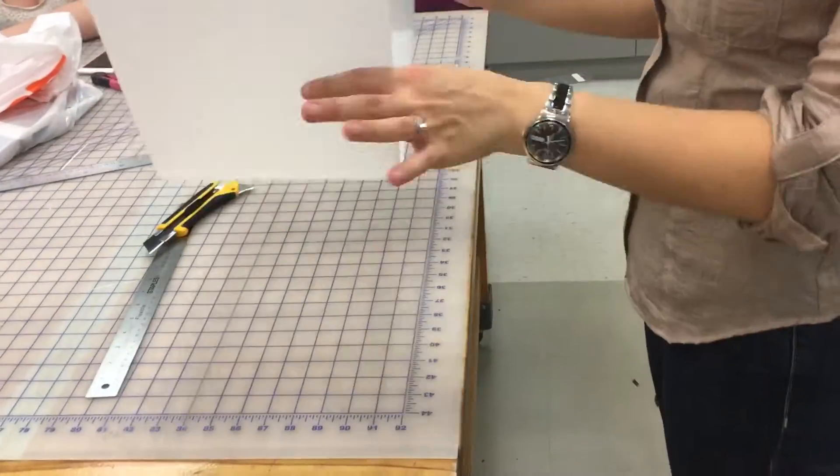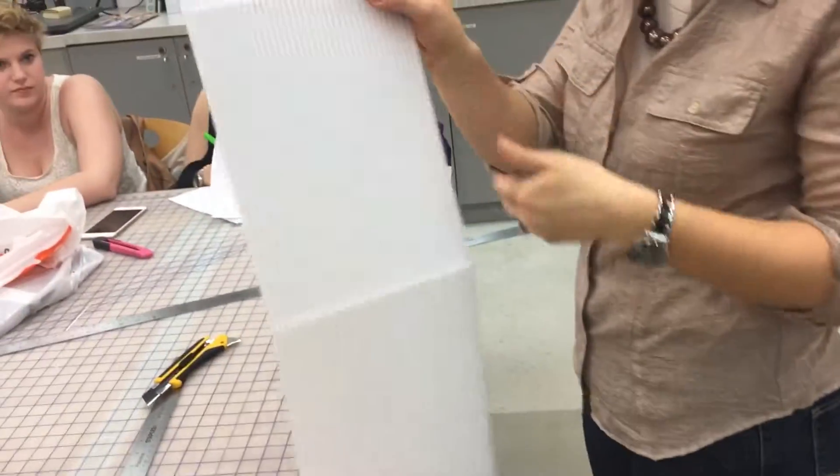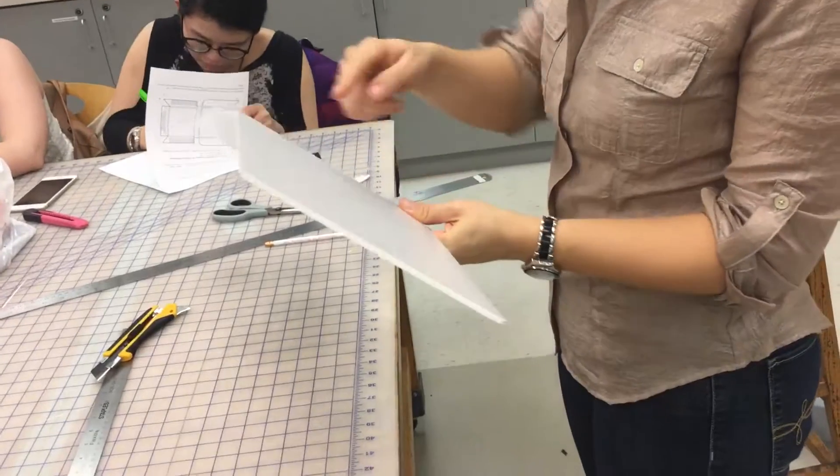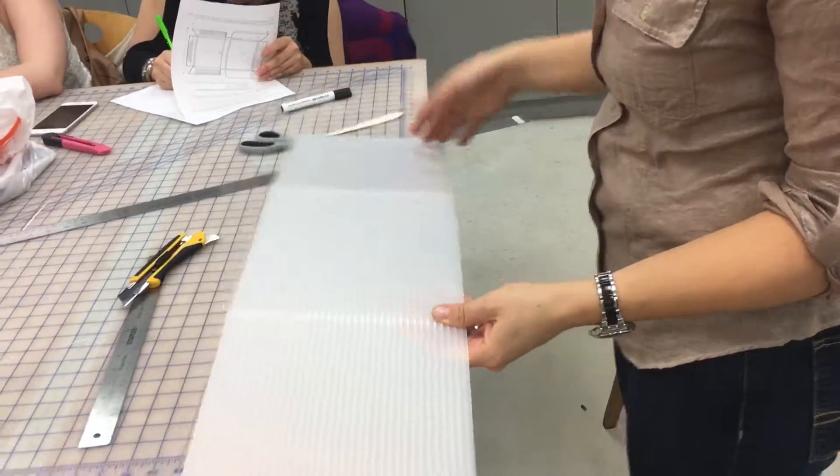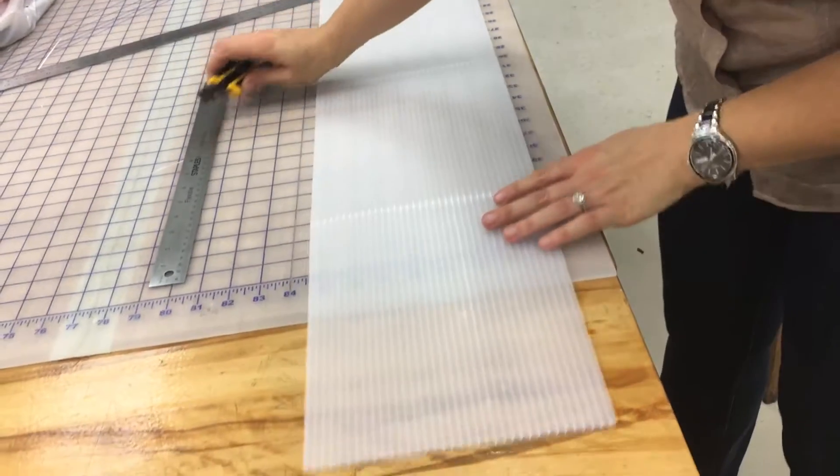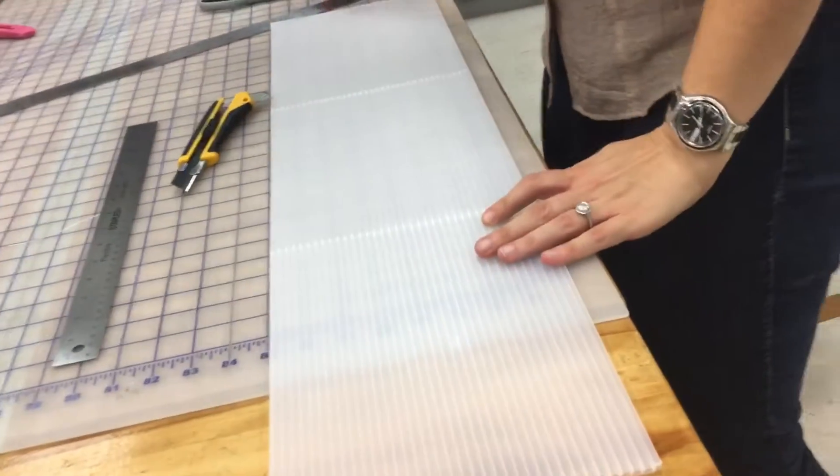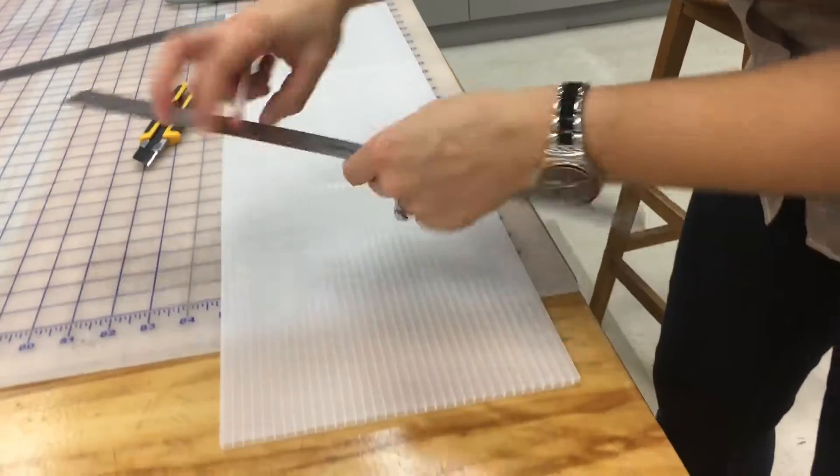So once you've done your first score, you're going to flip this over. And again, you can hopefully see the marks you have on your other side and go through. Otherwise, you can just re-measure. Mine are a little bit dim, so I'm going to re-measure really quickly.